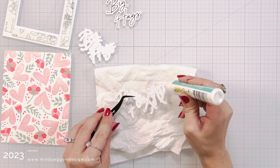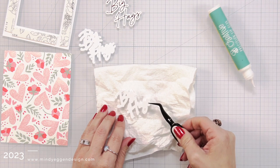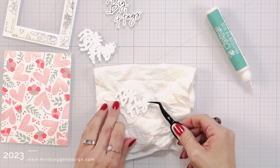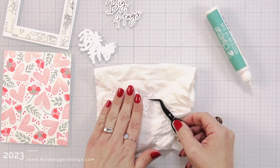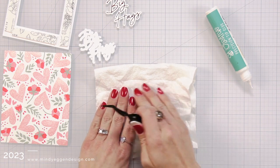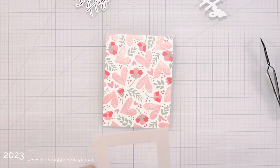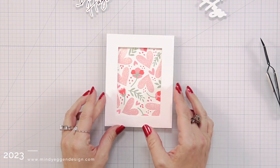which is the sentiment that I settled on. So I die cut a bunch of those out of white cardstock and I'm going to layer that together with my liquid glue to create dimension for my sentiment.